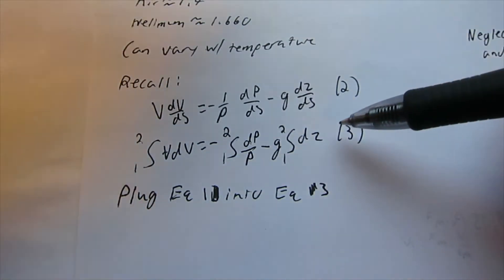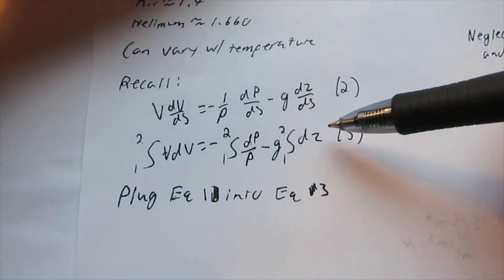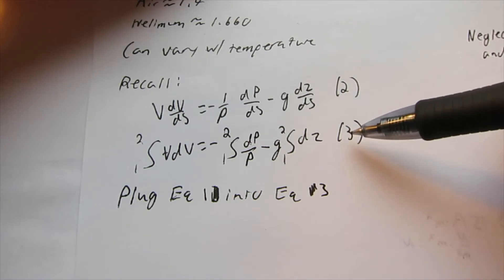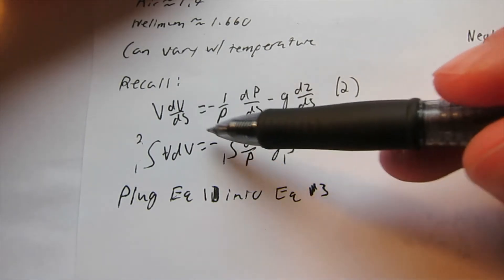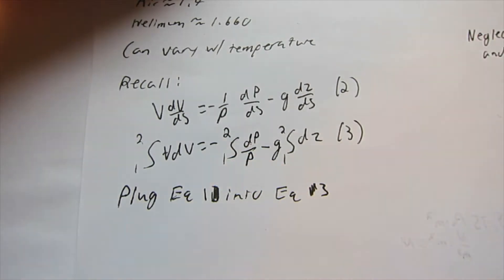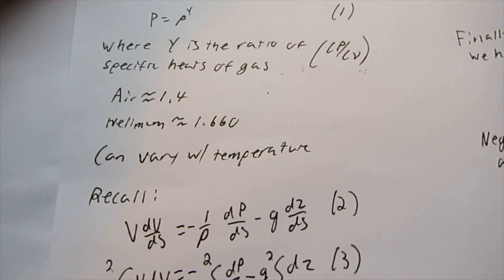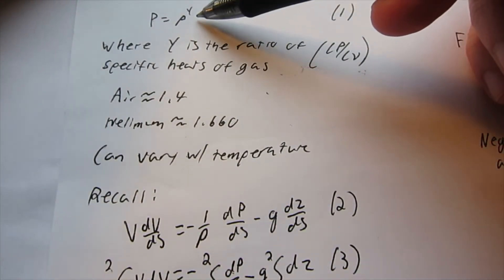So using this, back when we assumed an incompressible flow, you can easily integrate this, and we get the traditional looking Bernoulli's equation. But now we have this different value for pressure here.